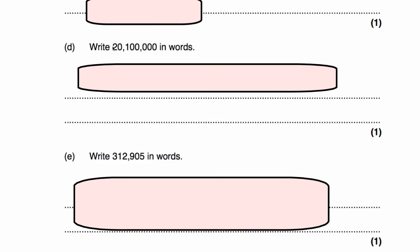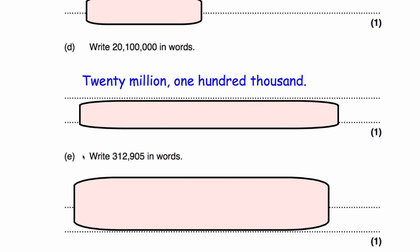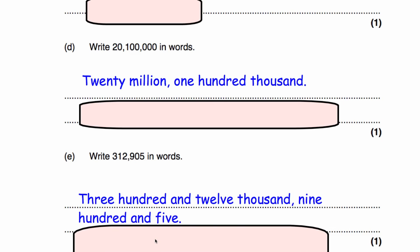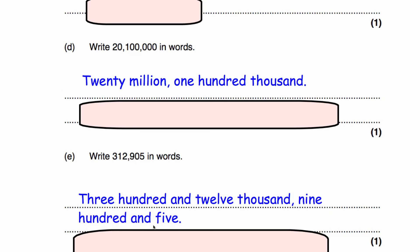Question D: we've got 20 million and 100,000, so our answer is twenty million, one hundred thousand. Question E: we've been asked to write the number 312,905 in words, so that's three hundred and twelve thousand, nine hundred and five.